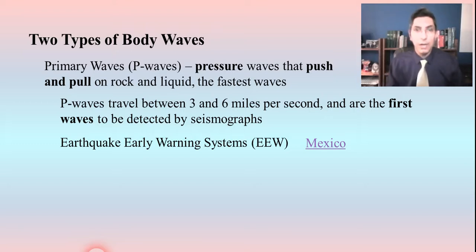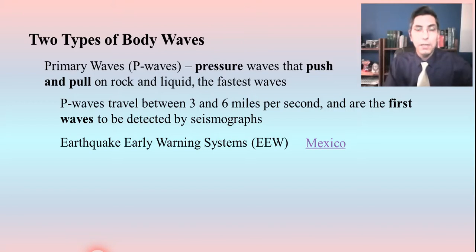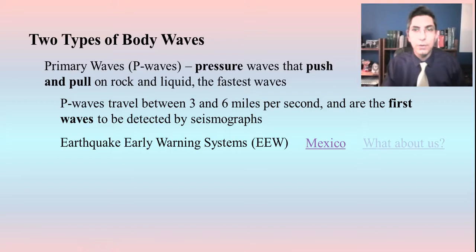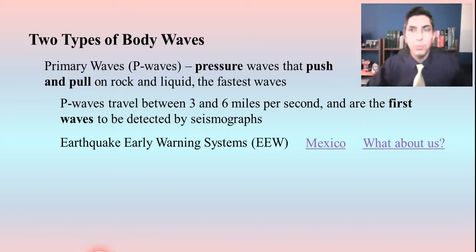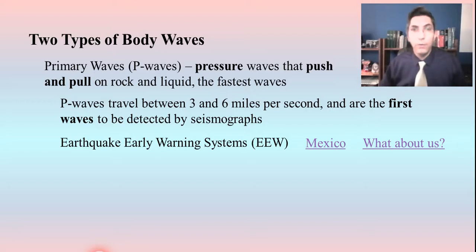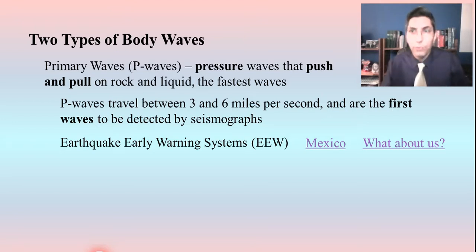Earthquake early warning systems are able to detect an earthquake usually between 15 seconds and a minute or so before people actually feel the shaking. That may not seem like much, but it's a huge amount of time for moving to a safe place — it can be the difference between a small number of casualties and tens of thousands. Japan and Turkey are other countries that use EEW systems. Occasionally there are false alarms, but very often these systems are able to save thousands of lives when they catch a real earthquake.